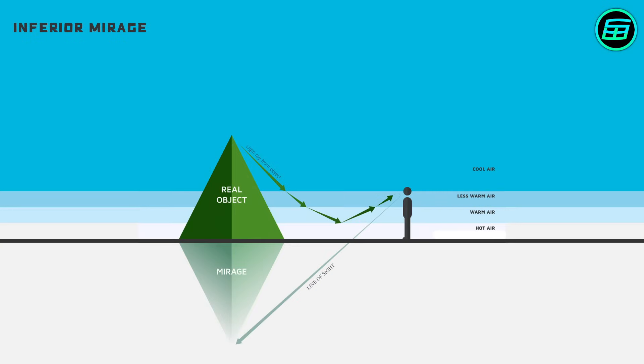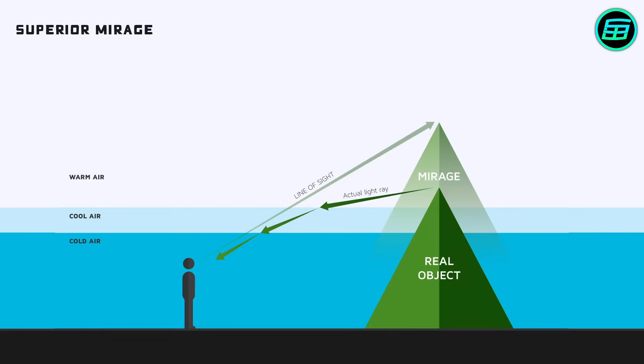The kind of mirage that appears below a real object is known as an inferior mirage. Superior mirages, on the other hand, appear above the real object. These occur when the air below the line of sight is colder than the air above it.